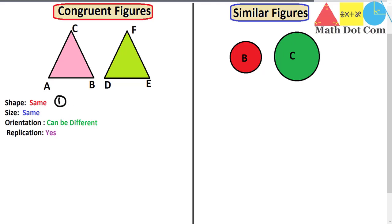Next we check the size of the two figures. The size of both triangles is the same — I have drawn them keeping in view the measurements of all three sides. If one side is 3 centimeters, the corresponding side of the other triangle is also 3 centimeters, and the same is true for the remaining two sides. So this is the second condition required for two figures to be congruent. These are the two main conditions to check.